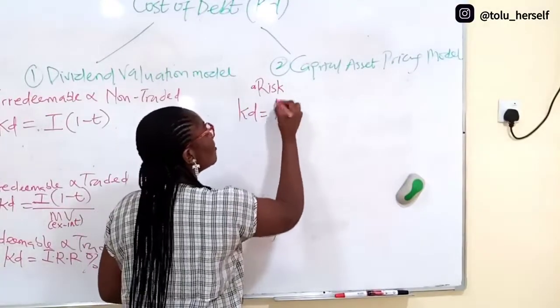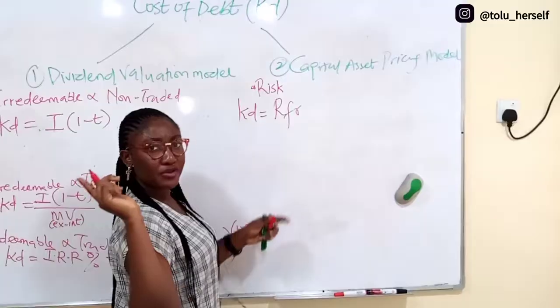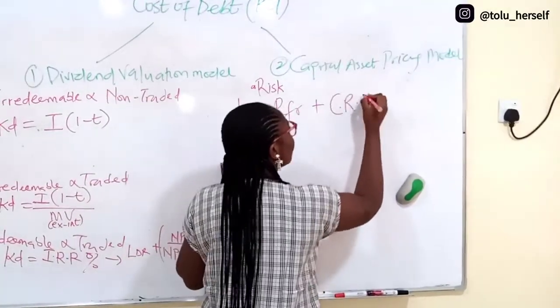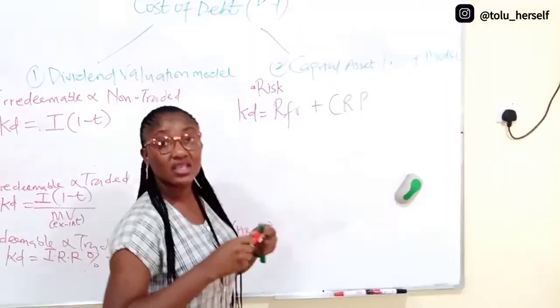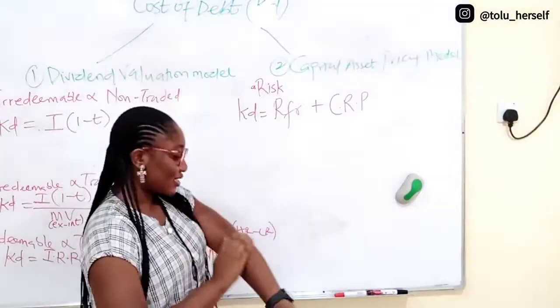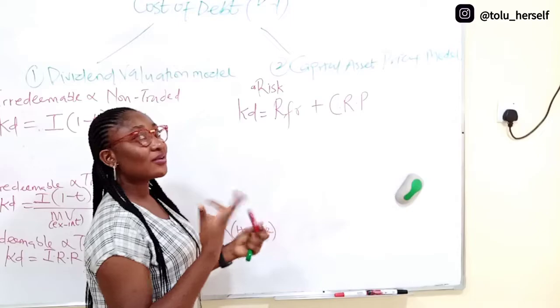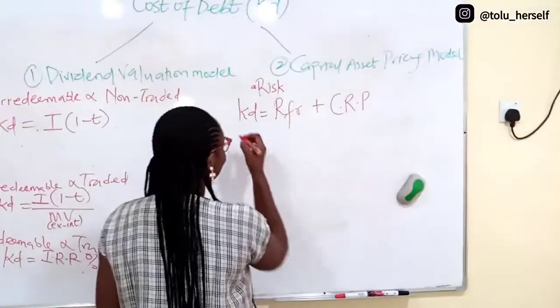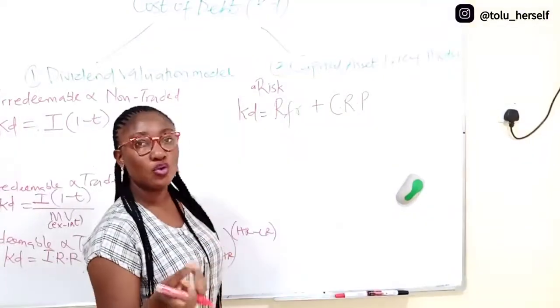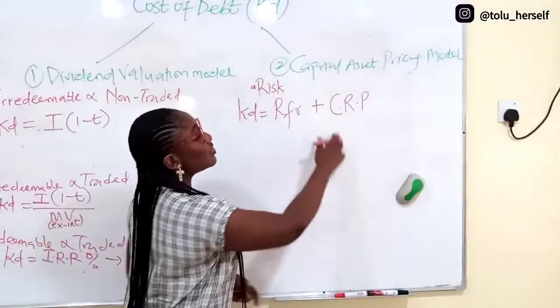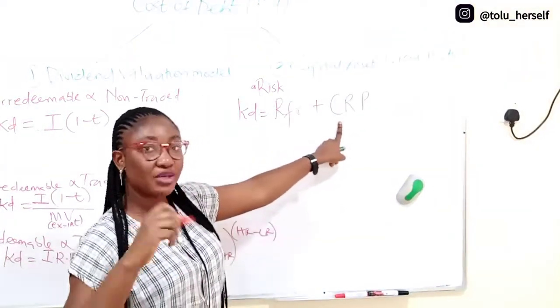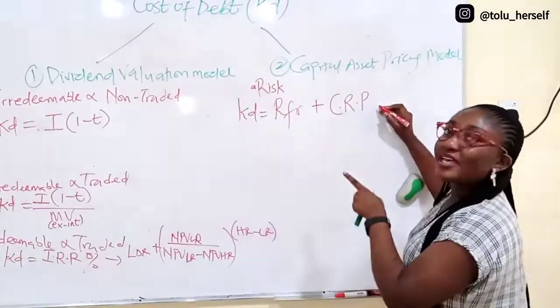KD equals the risk-free rate plus credit risk premium. The risk-free rate is usually government rates on treasury bills, always a very low rate given in every question. The credit risk premium will be given in basis points or in ratings. They can tell you that company ABC credit rating is AAA, or AA, or A, or BBB, or CC.